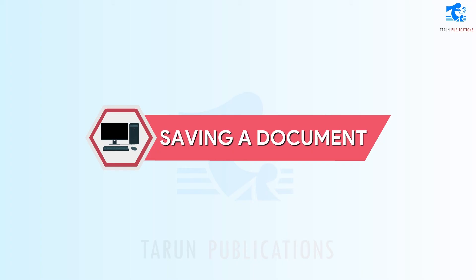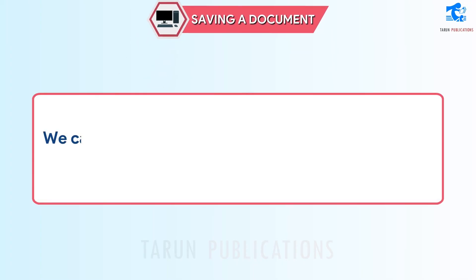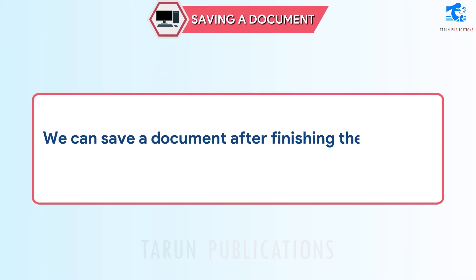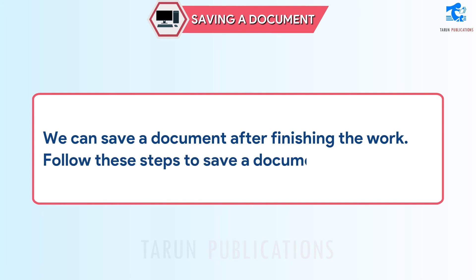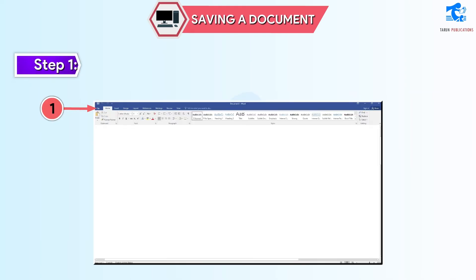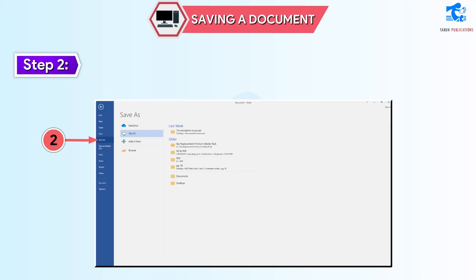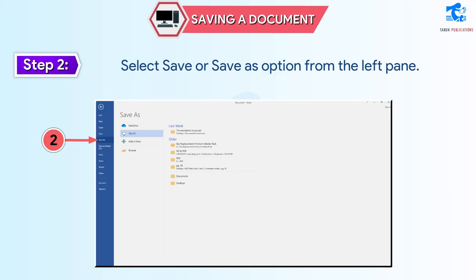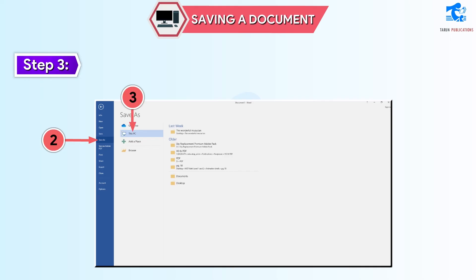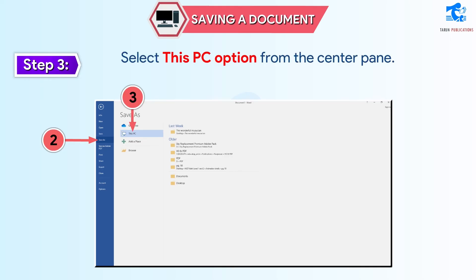Saving a document: we can save a document after finishing the work. Follow these steps to save a document in Word 2016. Step 1: click on the File tab. Step 2: select Save or Save As option from the left pane. Step 3: select This PC option from the center pane, then click on the Browse option.